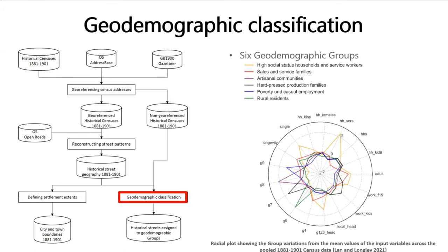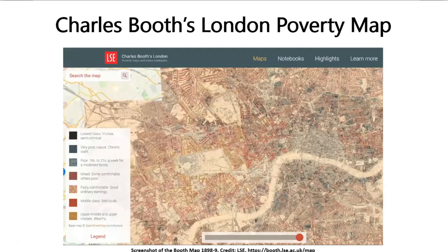Our K-means algorithm outputs six geodemographic groups. We provide a short pen portrait for each group based on the group profiles shown in the radar charts below. For example, the high social status group in orange shows high proportions of households living with domestic servants, while the hard-pressed production families in black have more child laborers. Although geodemographic classification is a relatively modern technique, street-based social classification was used by Charles Booth more than 100 years ago to display the results of his social survey.